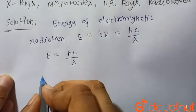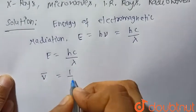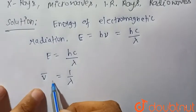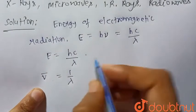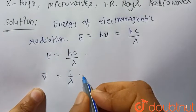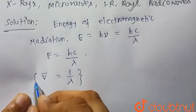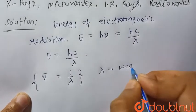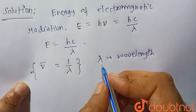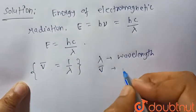Wave number is represented by v̄, which equals 1 divided by λ. So we can clearly see that wave number is inversely proportional to wavelength λ.